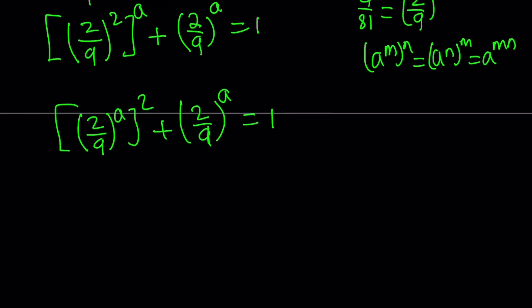Now, what do you see here? 2 over 9 to the power a is repeated, but there's a square, so we're going to use substitution. I'm going to call 2 over 9 to the power a, let's call that b. That gives us the following: 2 over 9 to the power a is b, so this is going to become b squared plus b equals 1. This should be familiar. If you're not familiar with this, then I want you to check out golden ratio.